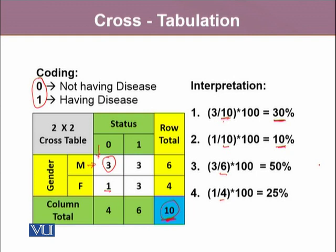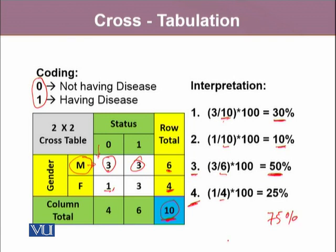Moreover, we can look at this table using its marginal totals. For example, dividing 3 by 6 means that among the male group, 50% of males do not have a disease, while 50% of males do have a disease. In the same way, dividing 1 by 4 means there are 25% females who do not have a disease, and we can also say that among females, 75% do have the disease. So there are multiple different ways to interpret this cross table.